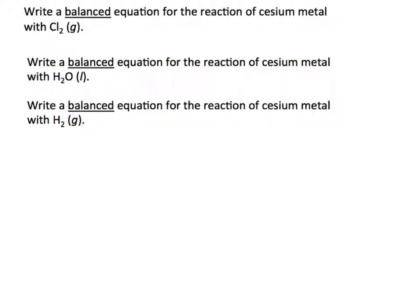Alright, practice problem 7.15 has three parts. The first is write a balanced equation for the reaction of cesium metal with chlorine.